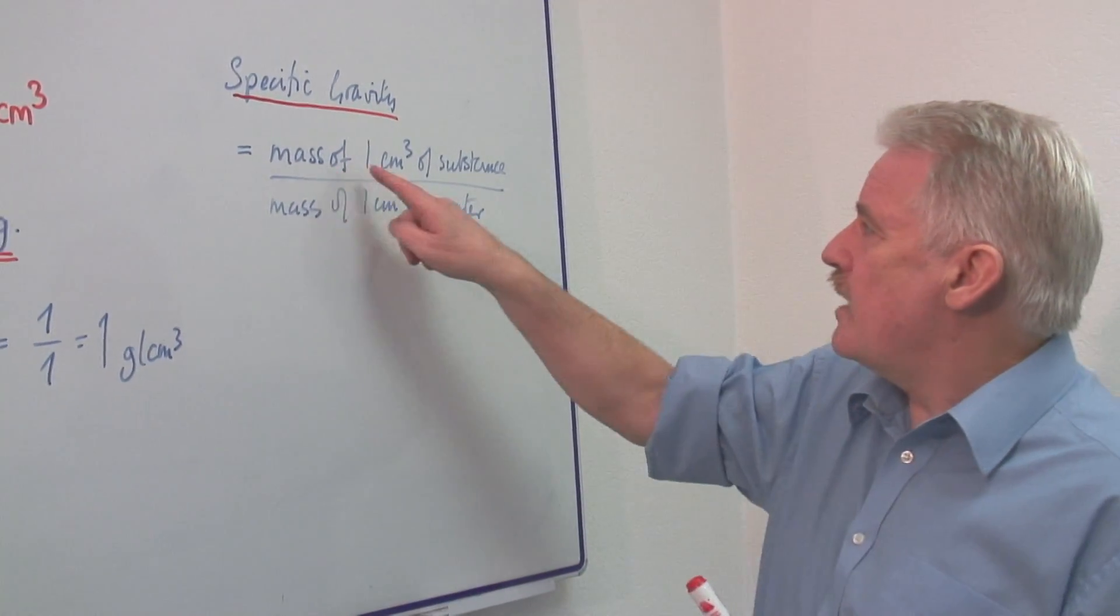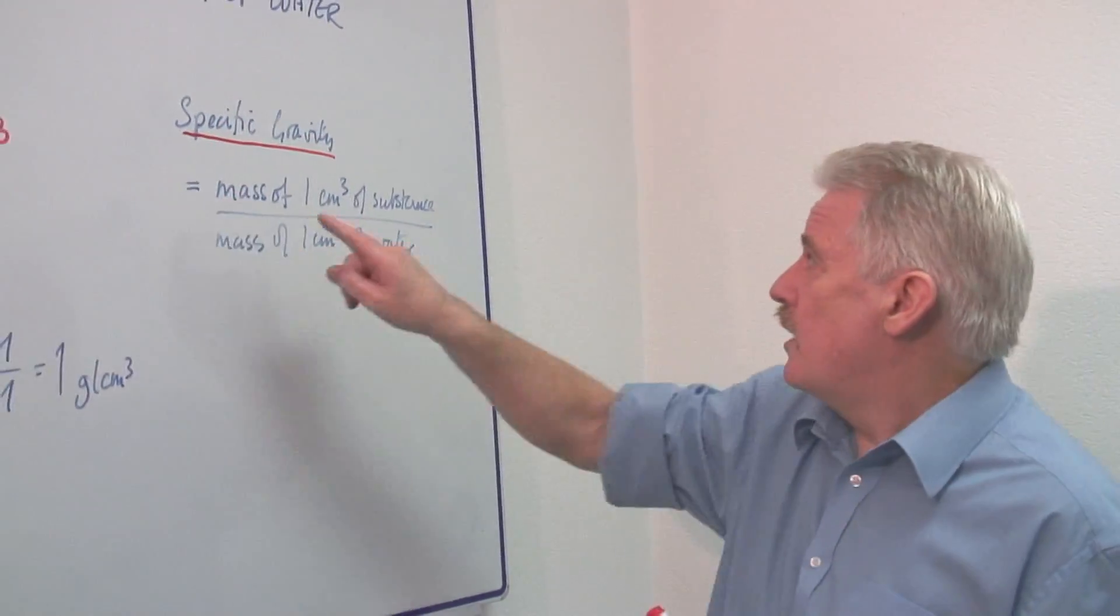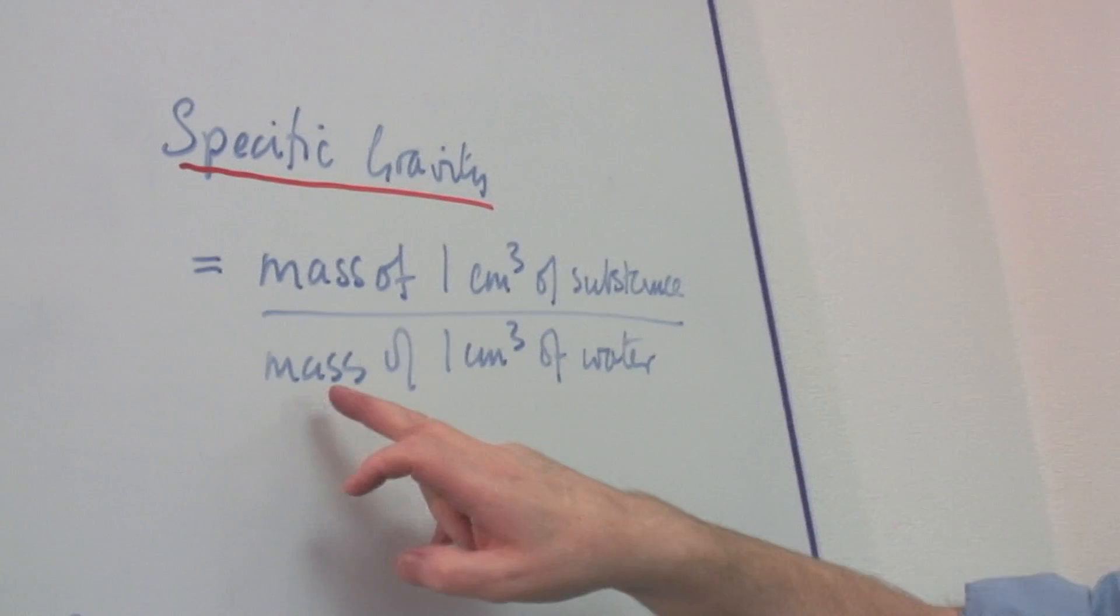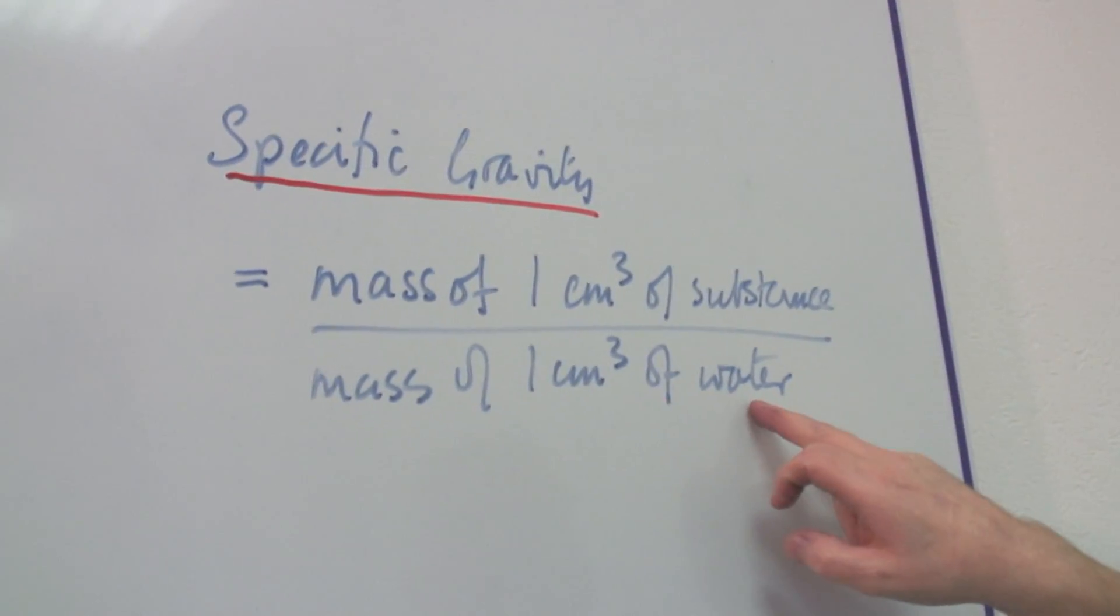So it is the mass of a cube of whatever substance you are interested in, divided by the mass of water.